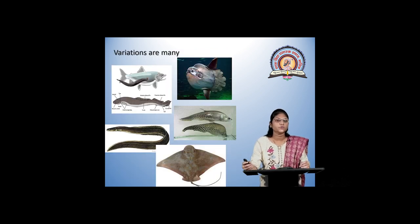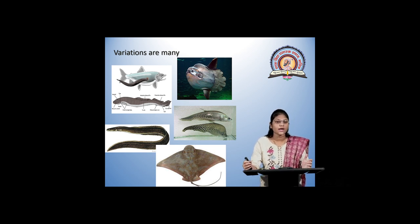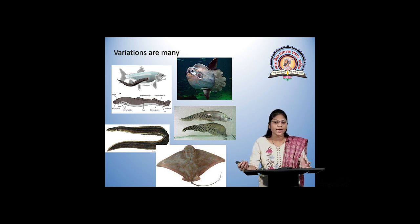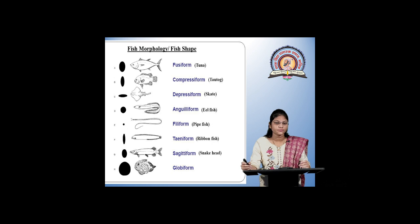As we know, there are many variations seen in fishes in their shapes as well as size. In the diagram, we can see that there are various shapes — some are cylindrical, some are globular, some are kite-shaped, some are somewhat triangular. Here we can see fish morphology and fish shapes in various forms.